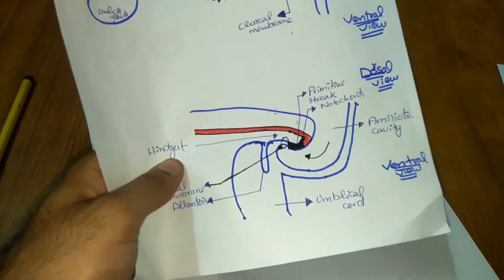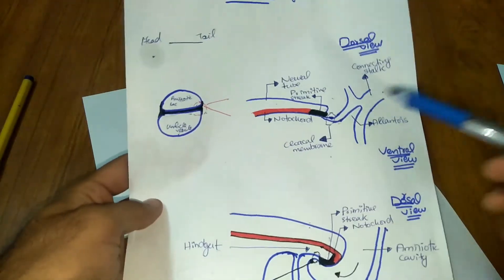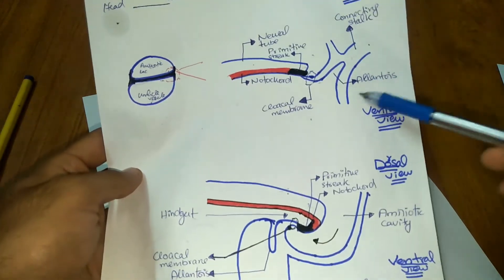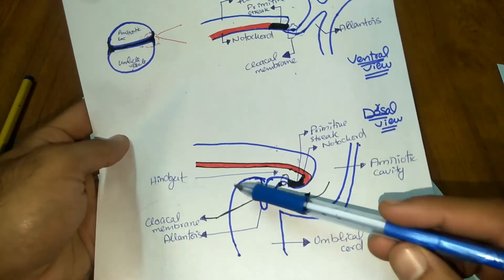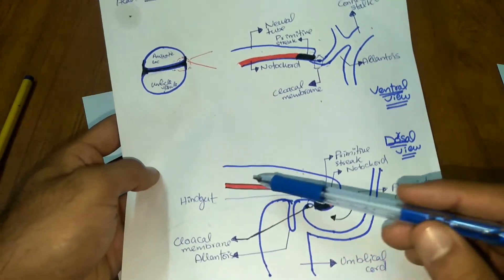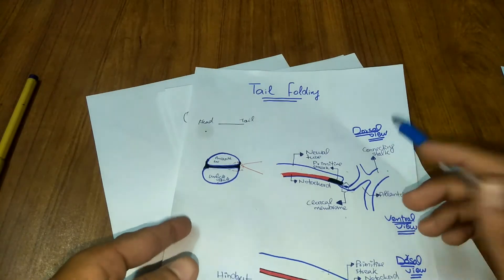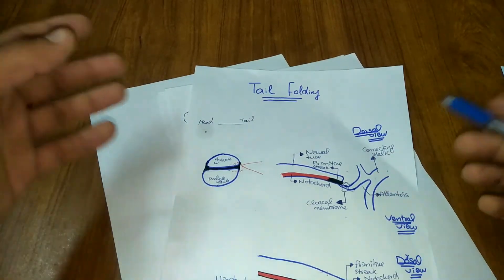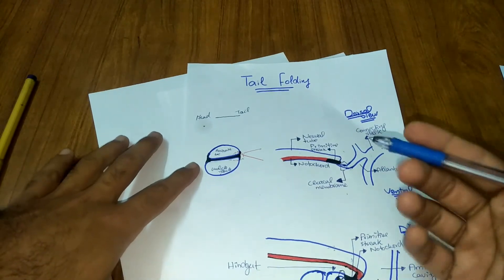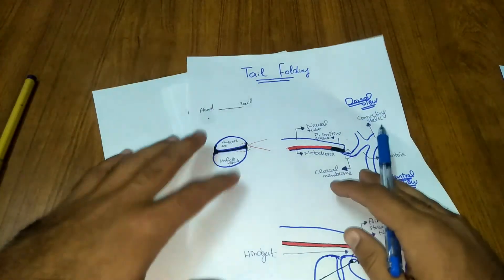So this is what happens during tail folding — structures present caudally and dorsally get folded toward the ventral end and more cranially. That's all from my side. Thank you very much. If you have any query or request regarding this video, you may ask in the comment section. Thank you very much.